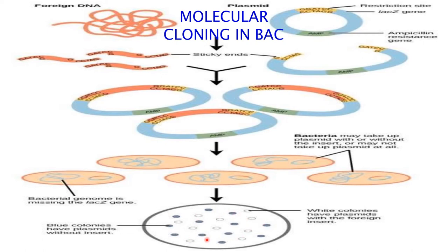Later, screening will be done by examining the white and blue colonies. The blue colonies have a plasmid without an insert — these are non-transformants — whereas the white colonies have a plasmid with the foreign gene of interest. In this way, screening of transformants is done.